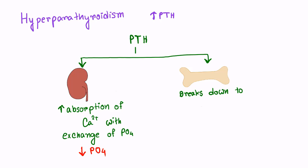On the other hand, it breaks down the bone to release calcium in blood. In the bone, osteoblast has receptors for PTH. When parathyroid hormone binds to its receptor on osteoblast, it increases the release of RANK ligand from osteoblast.